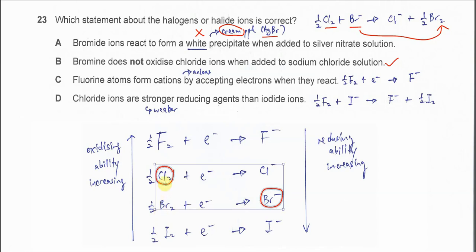If let's say now we add the bromide with the fluorine, fluorine also can oxidize bromide to bromine. Okay, because fluorine and chlorine has a stronger oxidizing ability compared to bromine. Okay, so therefore B is correct.